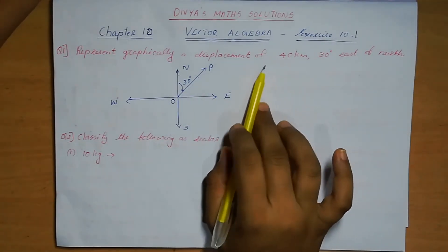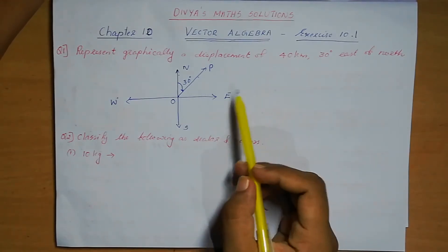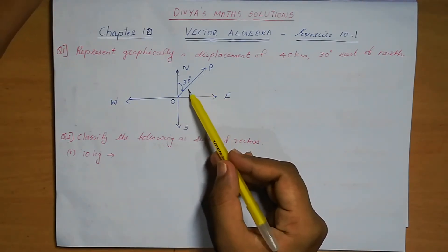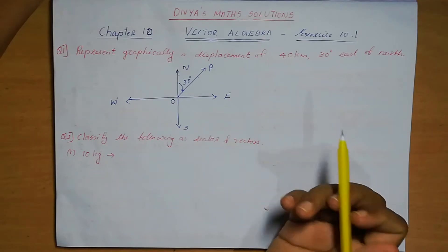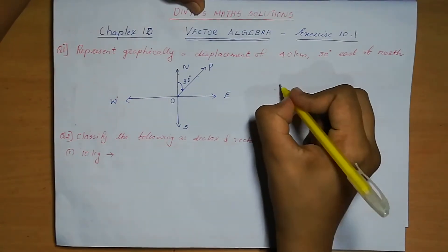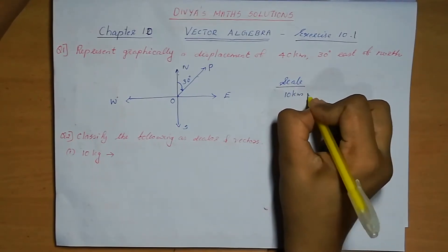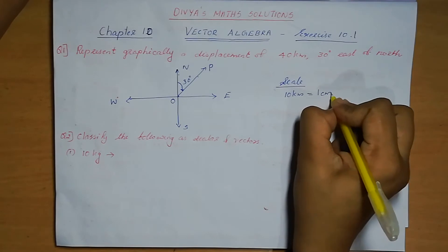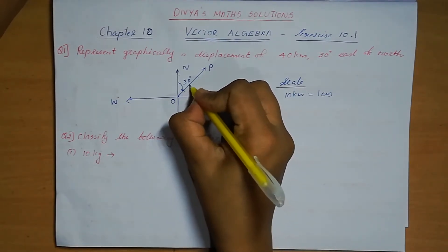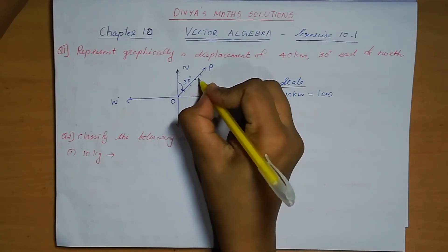Next we need to make the displacement of 40 km. So here we need to represent 40 km. We need to take some scale. So scale we can take it as 10 km is equal to 1 cm. Here we can take 1, 2, 3, 4 — that means 1 cm, 2 cm, 3 cm, 4 cm.